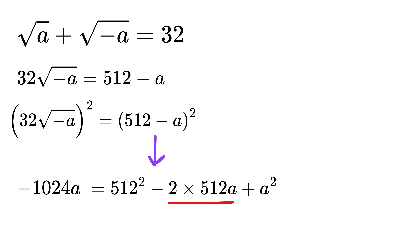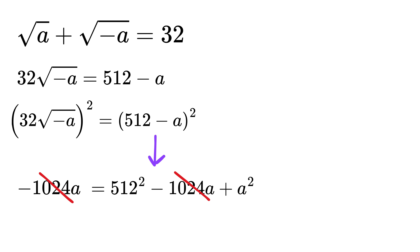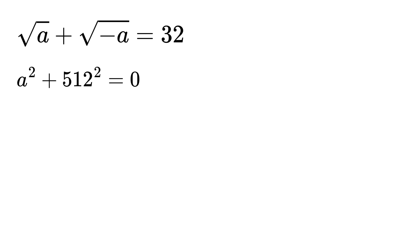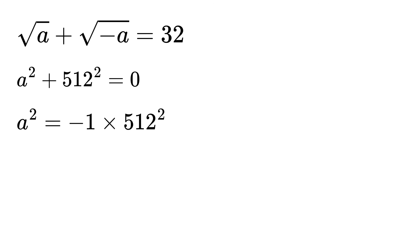2 times 512 is 1024. Notice that minus 1024a will get cancelled from both sides, and we will be left with a squared plus 512 squared equals 0. This means a squared equals minus 512 squared, or minus 1 times 512 squared.